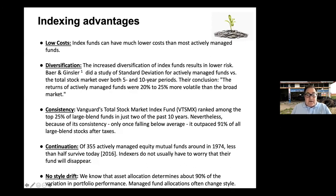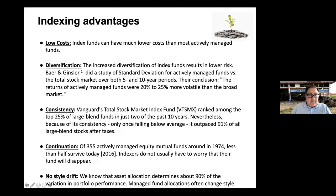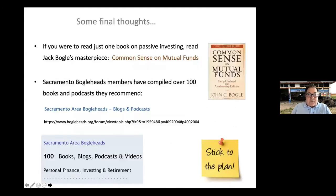Finally, style drift: asset allocation determines about 90% (plus or minus 4%) of the variation in portfolio performance. Actively managed fund allocations often change their style, which is yet another advantage of index funds — they maintain their style consistently.